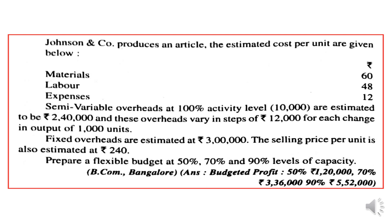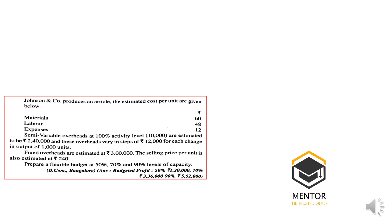The second question: Johnson and Company produces an article. Estimated cost per unit — material, labor, and expenses are variable items. Semi-variable overheads at 100% capacity (10,000 units) are ₹2,40,000, varying by ₹12,000 for every change of 1,000 units in output — meaning if 1,000 units increase, variable cost increases by ₹12,000, and vice versa. Fixed overheads are ₹3 lakhs. Selling price per unit is ₹240. Prepare flexible budget at 50%, 70%, and 90% capacity.